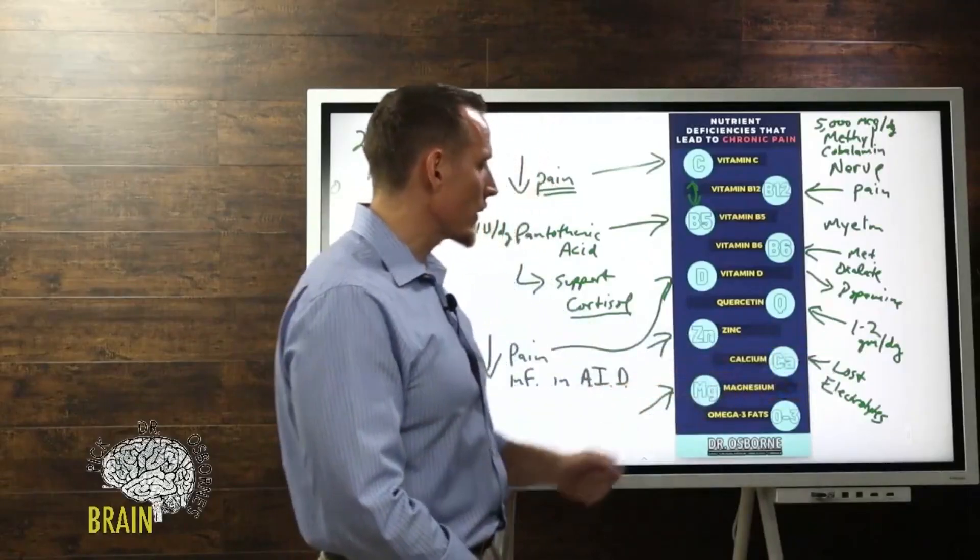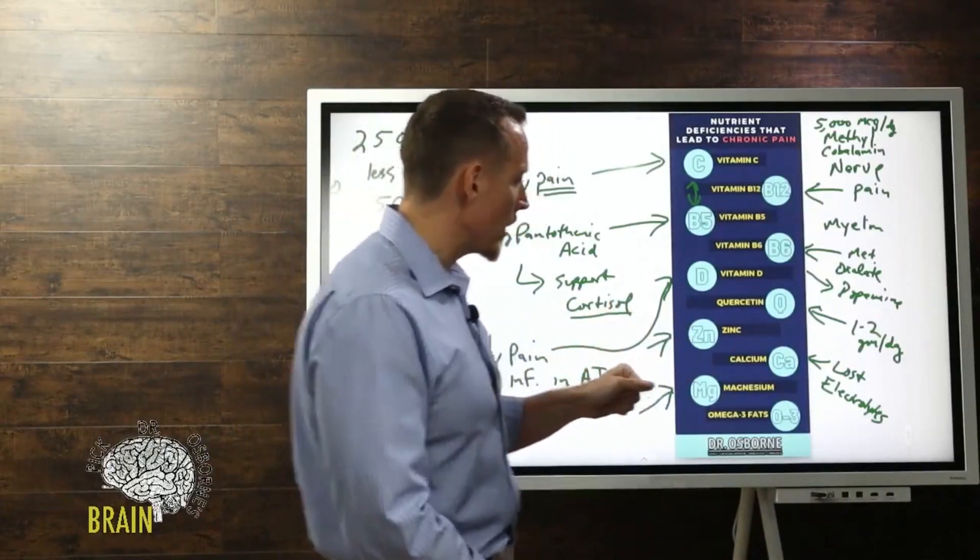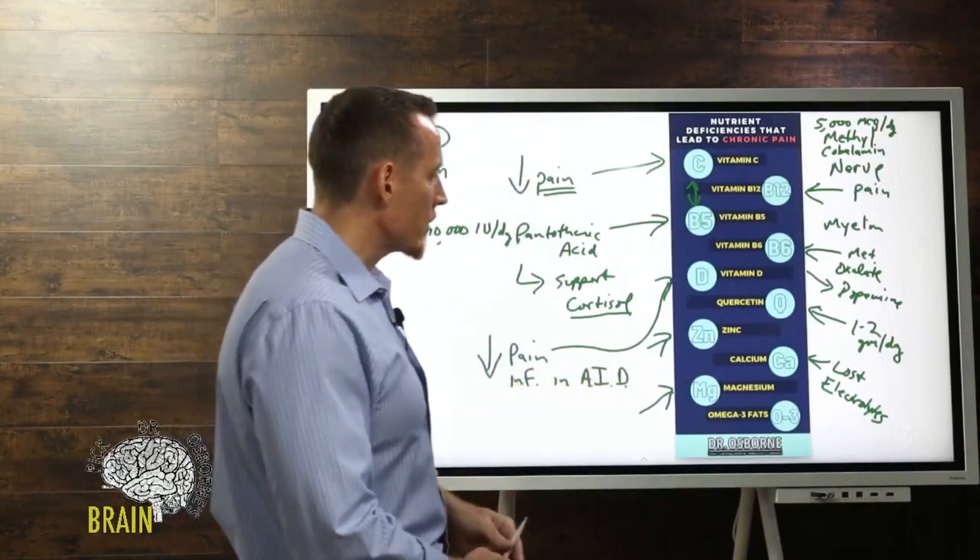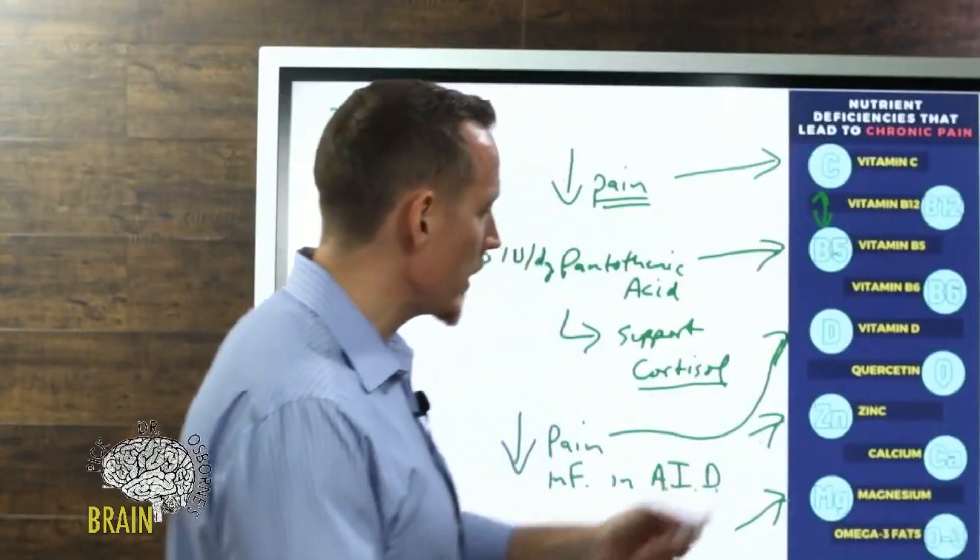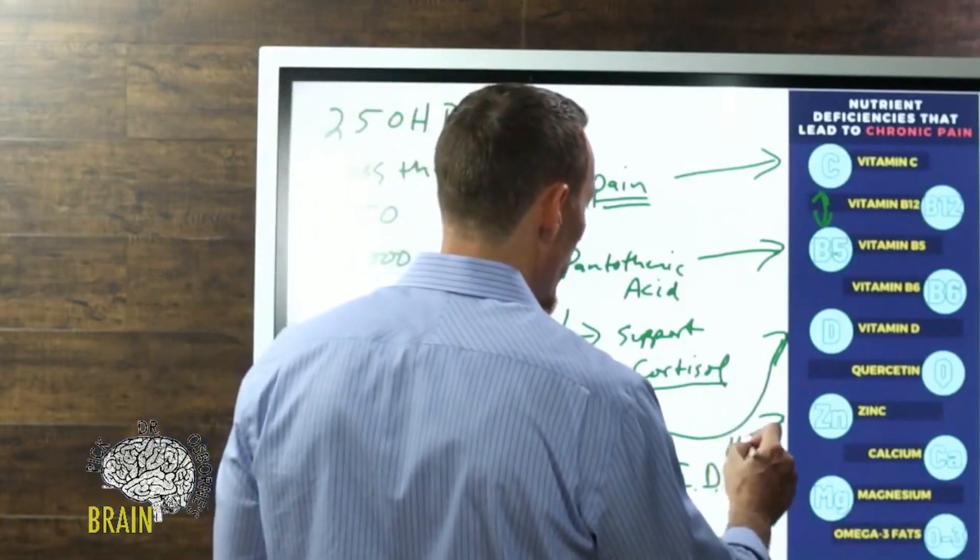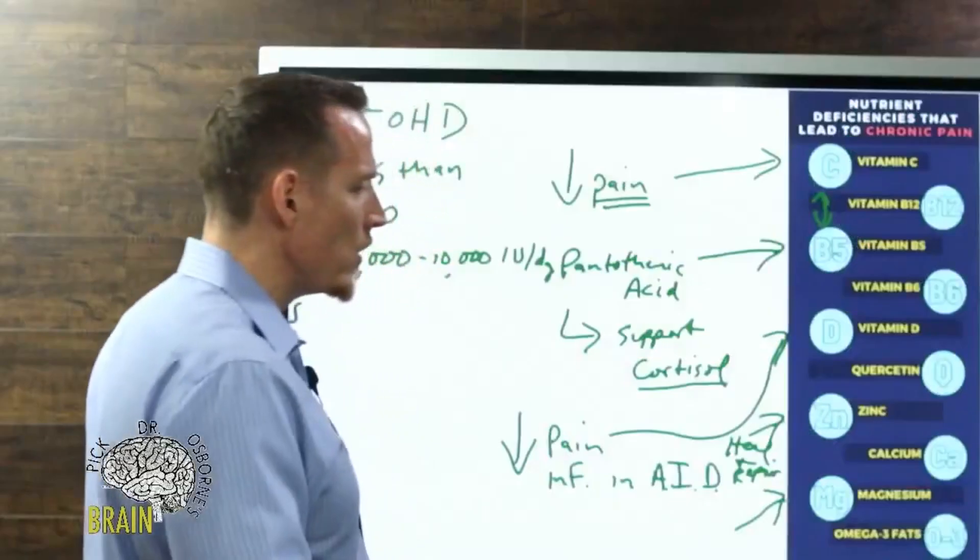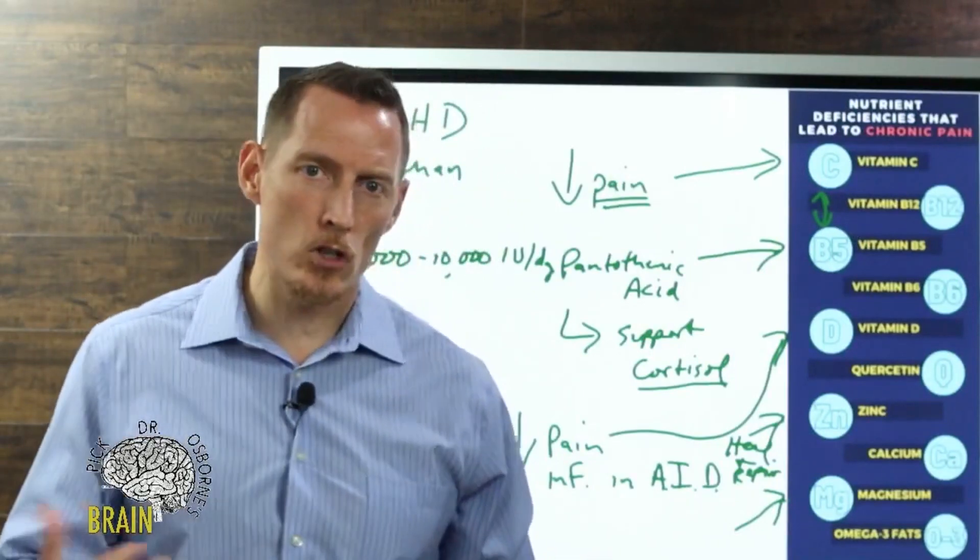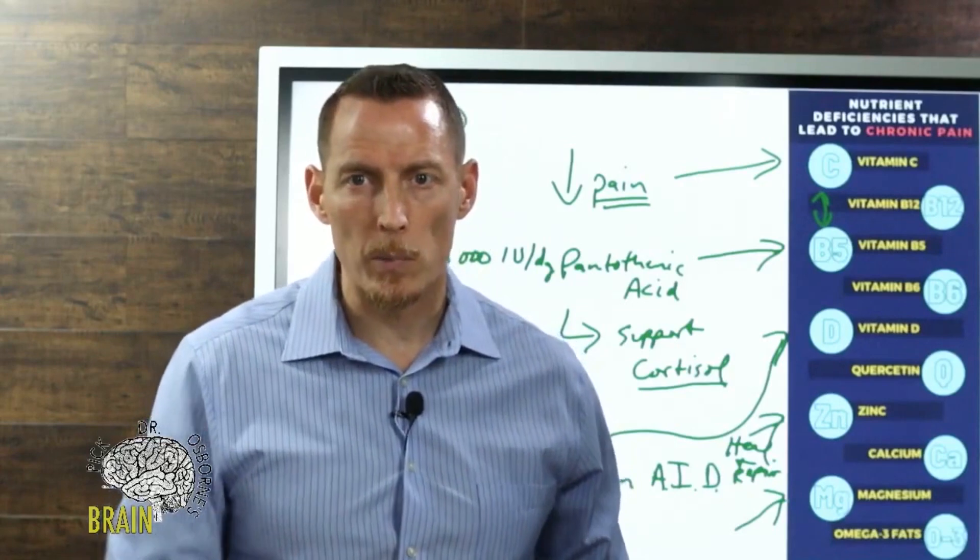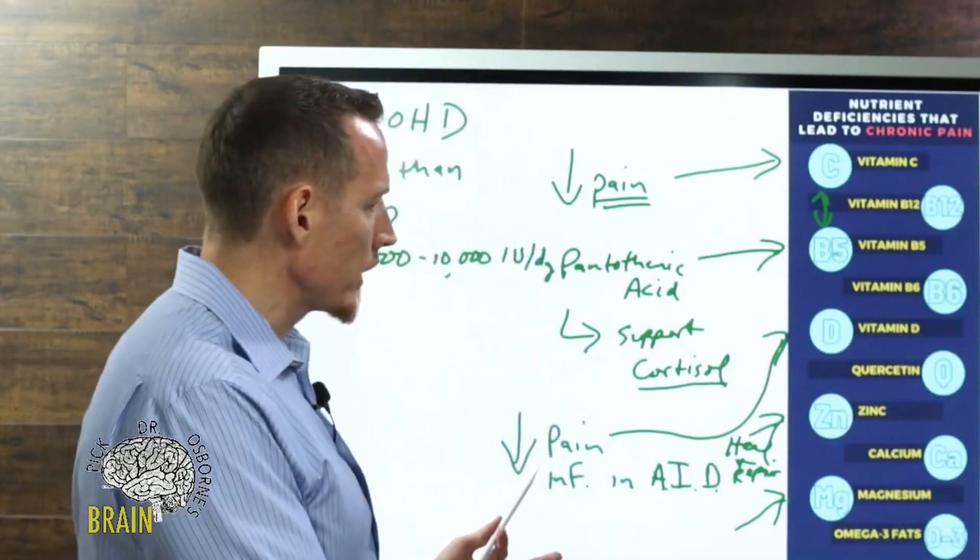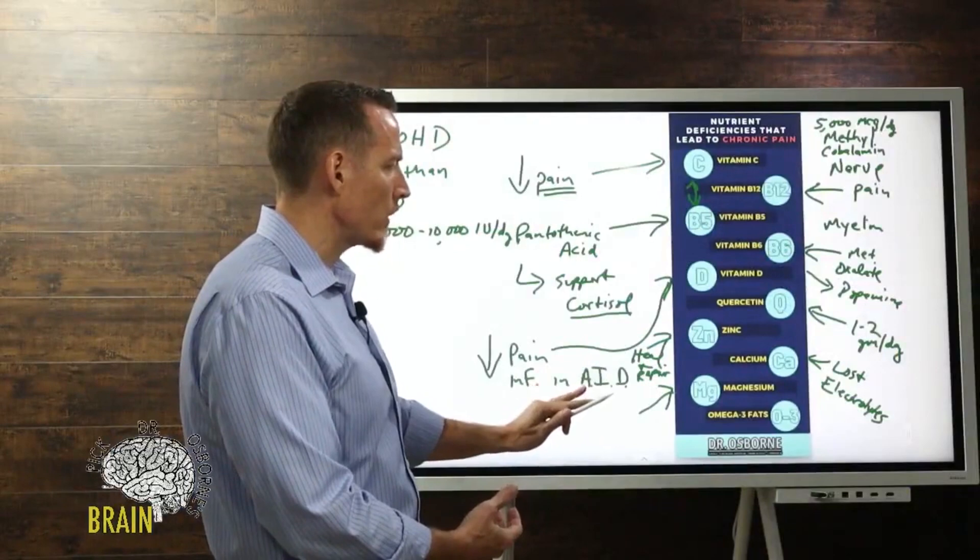Zinc plays a major role as an antioxidant. One of its functions is to help quench or stop aggressive free radical formation that damages your DNA, so it helps your body heal and repair. Zinc is critical for healing and repair. A lot of people demonize inflammation, but the reality is inflammation is what your body uses to break down old tissue so it can repair and build new tissue. You want a healthy level of inflammation, and zinc is what regulates the healing and repair around healthy inflammation.